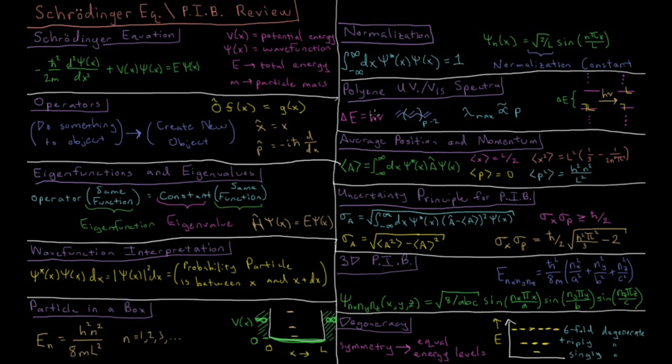The particle in a box is really useful as a model system for the UV-Vis absorption of conjugated polyenes. We have some conjugated polyene where we have electrons filling up pi orbitals all the way up until some certain level where we have the highest occupied molecular orbital. And then some photon is absorbed, and it promotes an electron from the HOMO orbital to the LUMO orbital, the lowest unoccupied molecular orbital.